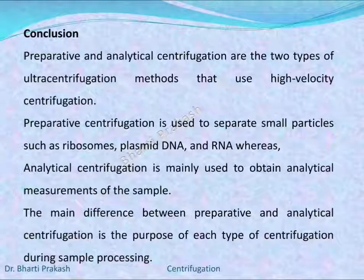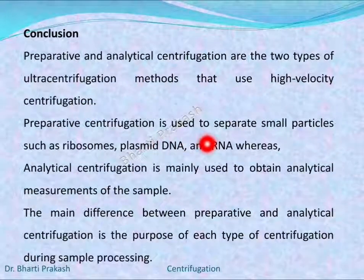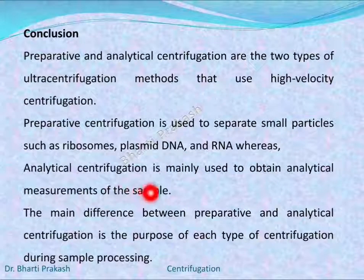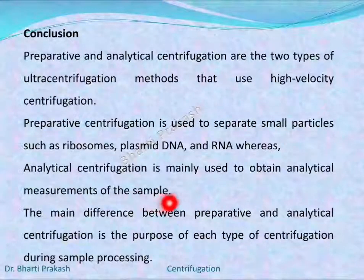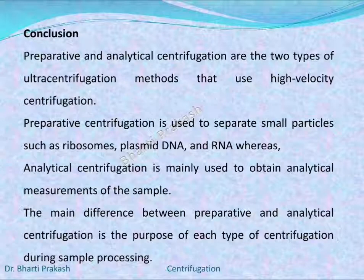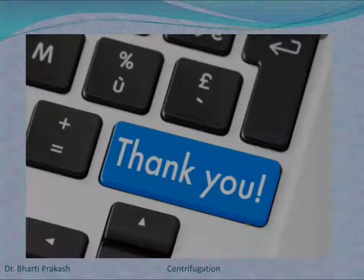Concluding our series of lectures on centrifugation, the preparative and analytical centrifugation are the two types of ultracentrifugation methods that use high-velocity centrifugation. Preparative centrifugation is used to separate small particles such as ribosomes, plasmid DNA, and RNA, whereas analytical centrifugation is used to obtain analytical measurements of the sample. The main difference between the two is the purpose of each type during sample processing. With this lecture, we conclude the series of lectures on centrifugation. In the next lecture, we will take up a new biophysical technique. Thank you.